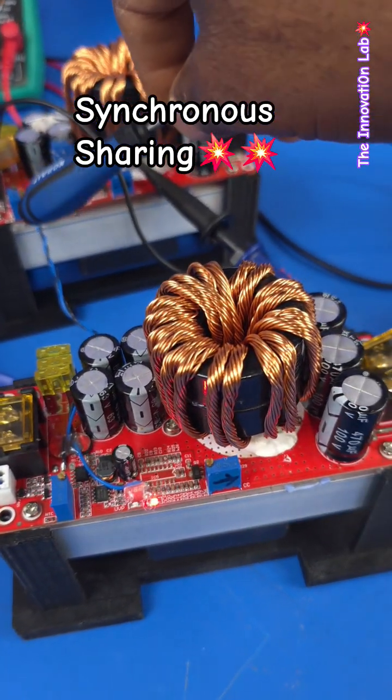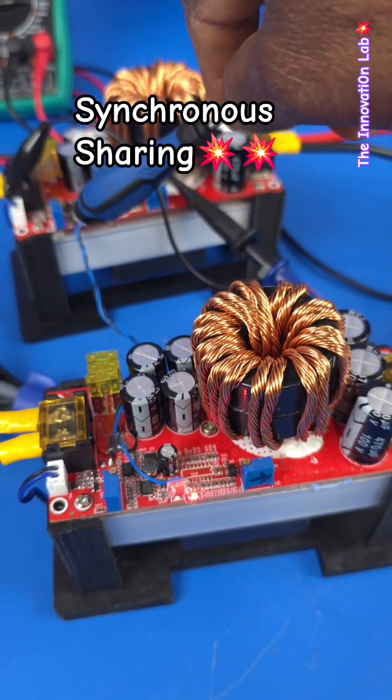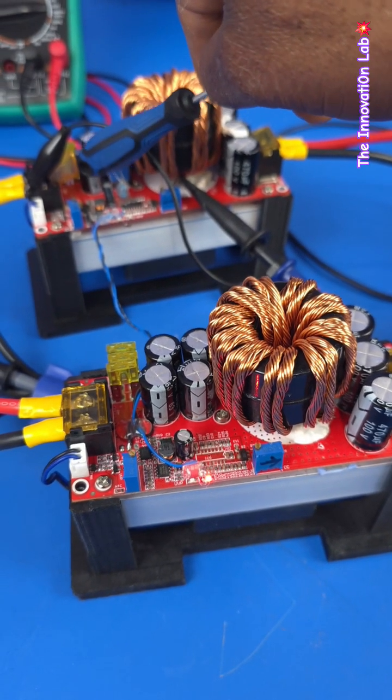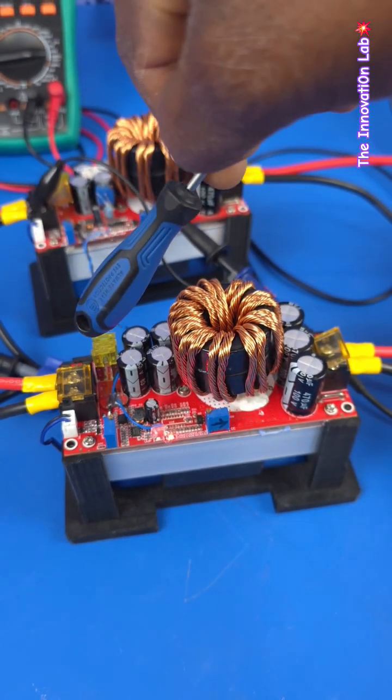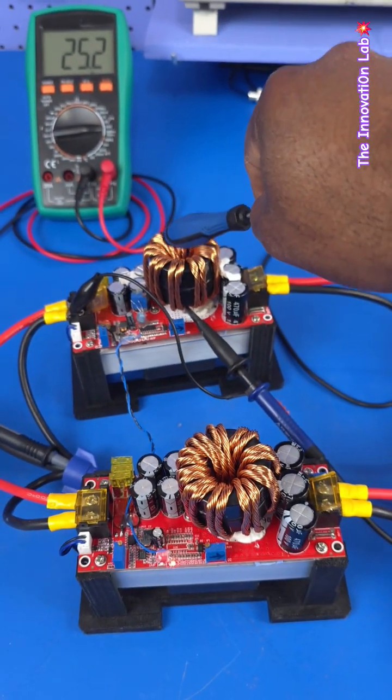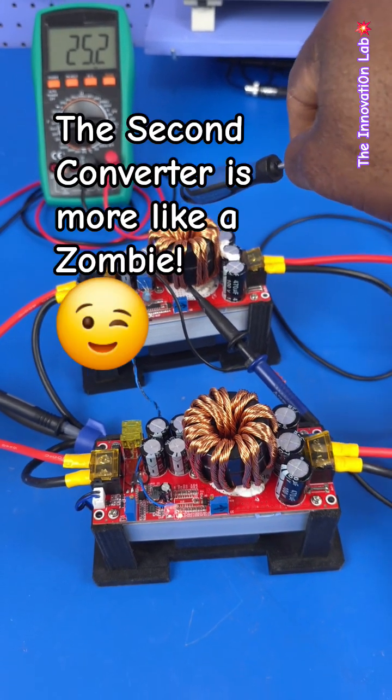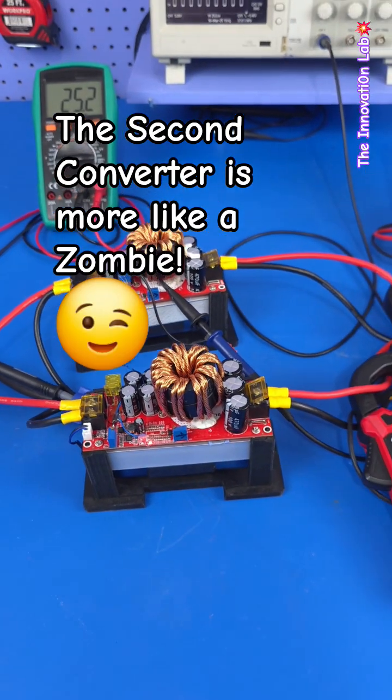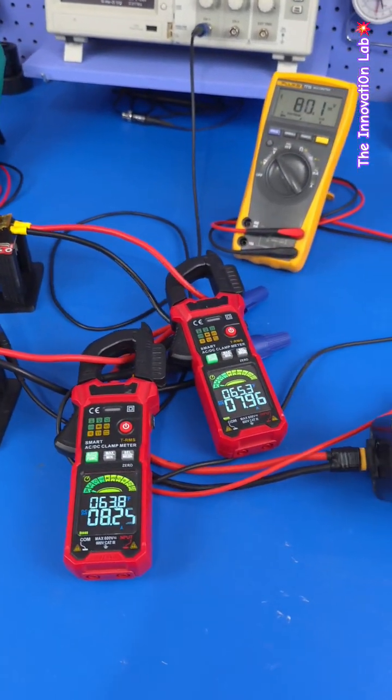The blue wire here shares the PWM signal between this converter and this converter. This converter is actually the one that is driving the system.